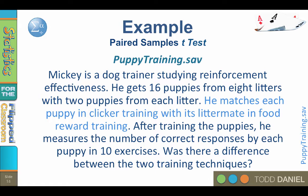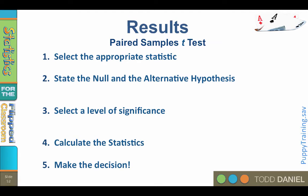Let's walk through the five steps of hypothesis testing. Step number one, select the appropriate statistic. We will compare two dependent samples. One sample is the puppies who were trained using clicker training, and the second sample was their littermate, the twin siblings, who were trained with food reward. Because they are matched pairs, their scores are not independent. To compare these two samples, we will use a paired samples t-test.